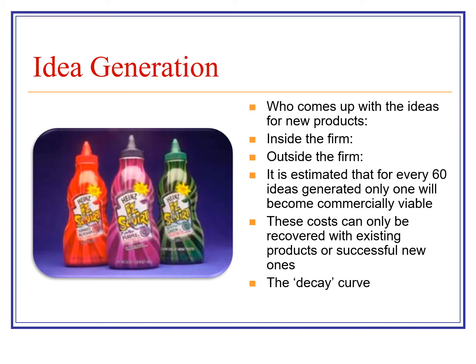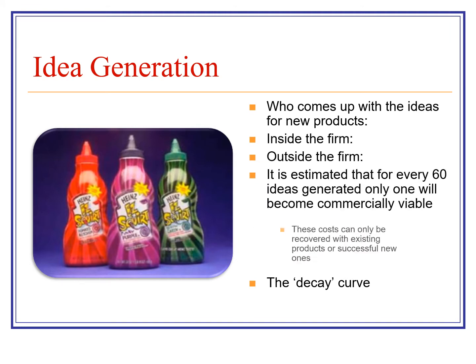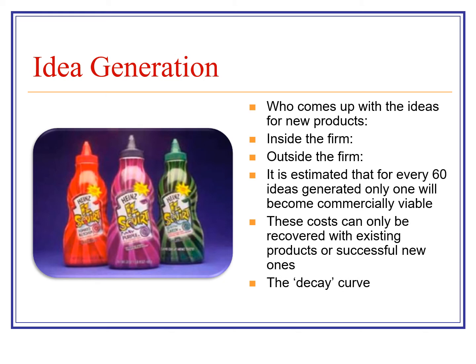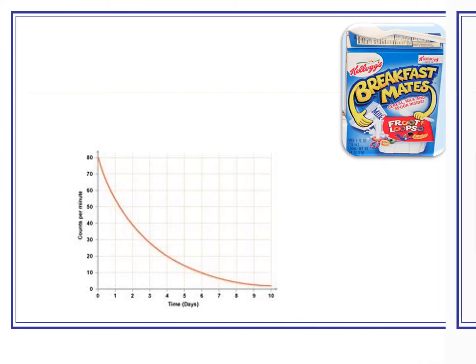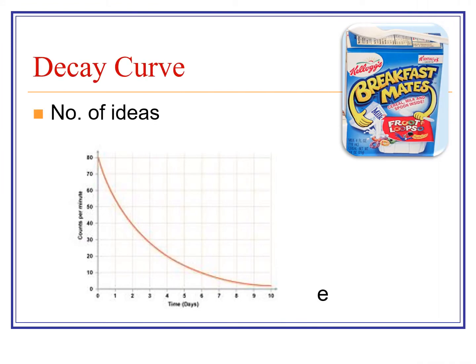So this is the decay curve. On the left-hand side there's the number of ideas, and on the bottom axis there's the time. As time goes by, the ideas fall — you weed them out — until just one is left, which is commercially viable. Think of the time, the effort, the meetings, the investment that's gone into getting to this stage. An example up here is Kellogg's Breakfast Mates — milk was inside the cereal packaging so you wouldn't need to worry about logistics. It didn't last too long, so that was a decay failure.